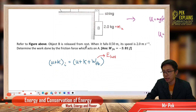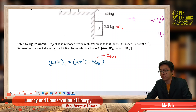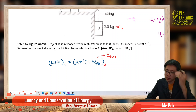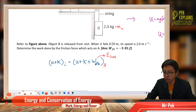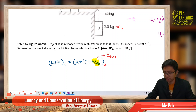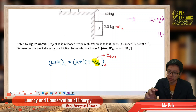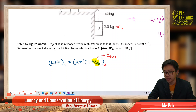So we apply the law of conservation of energy. The initial total energy equals the final total energy. Some part of the initial energy has converted to heat energy, which is the work done due to friction, and it becomes the energy loss from the system.